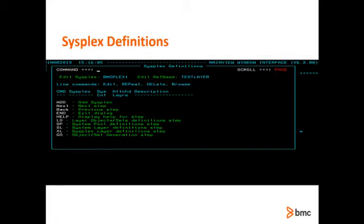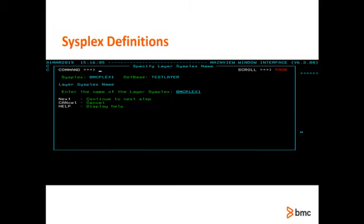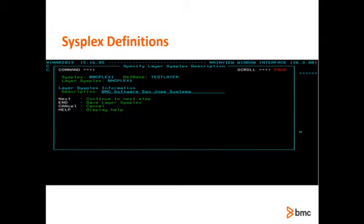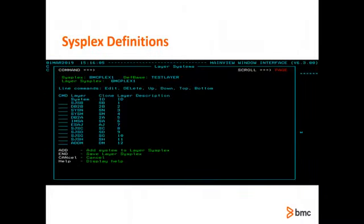TOM needs to know about the sysplex and its systems where objects are to be generated. The sysplex definition describes either the local sysplex or another in the complex. It can contain all the systems or just a subset of the systems in the plex. This point in the layering wizard allows the user to define the sysplex and its systems. You can add a new sysplex definition or edit an existing one. Issue the add primary command, enter a 1 to 8 alphanumeric character sysplex name. If you use the name of the local sysplex, TOM will fill in the system names for you.